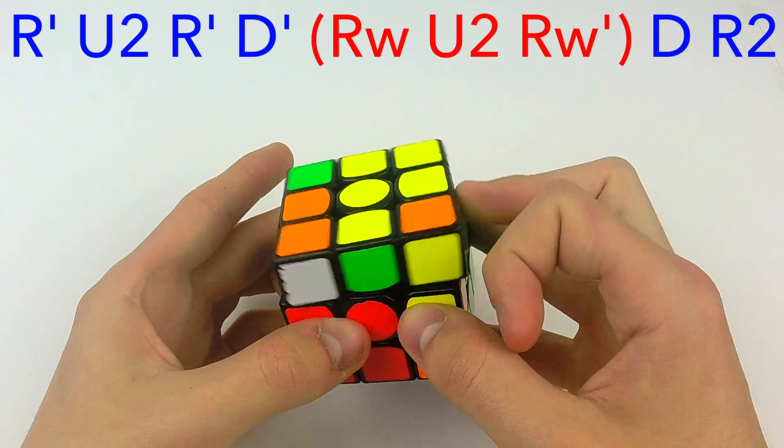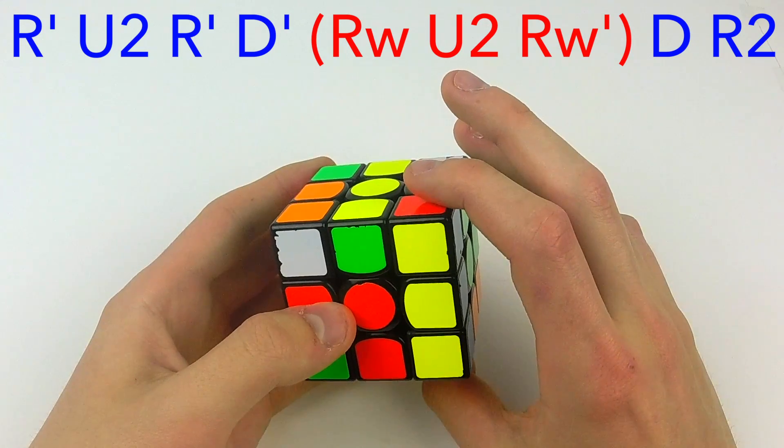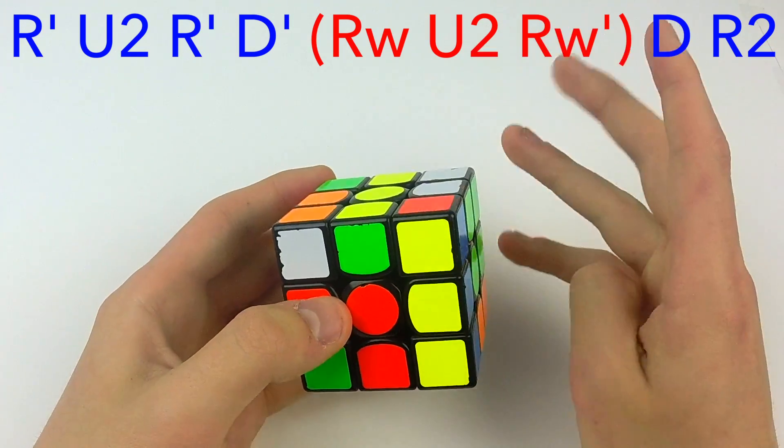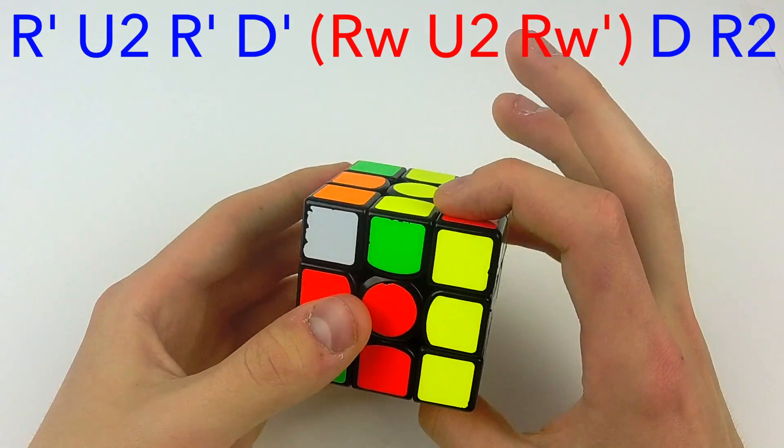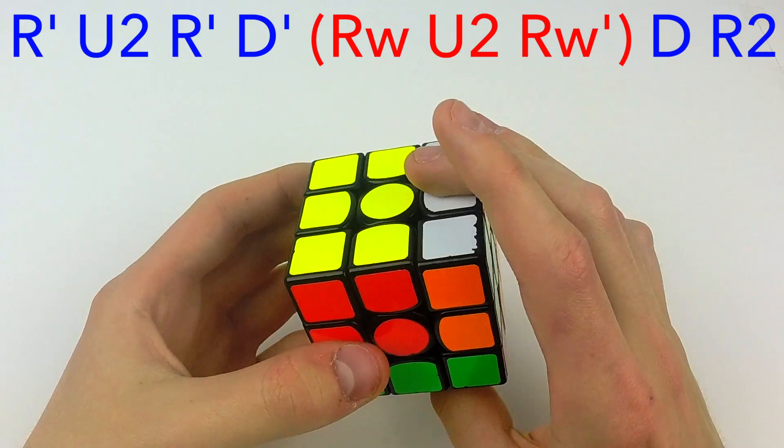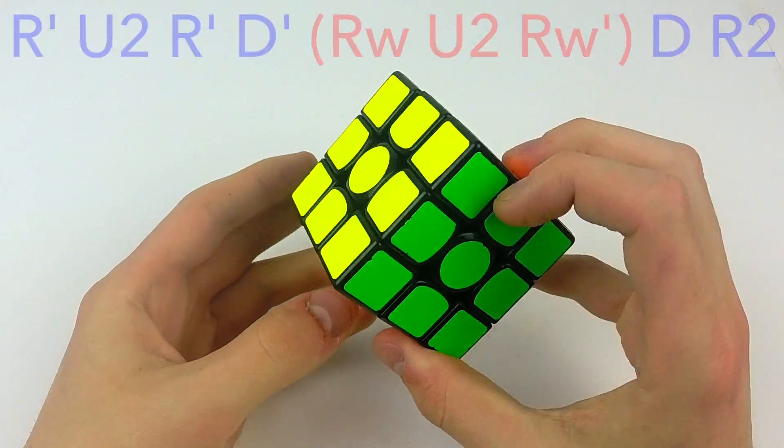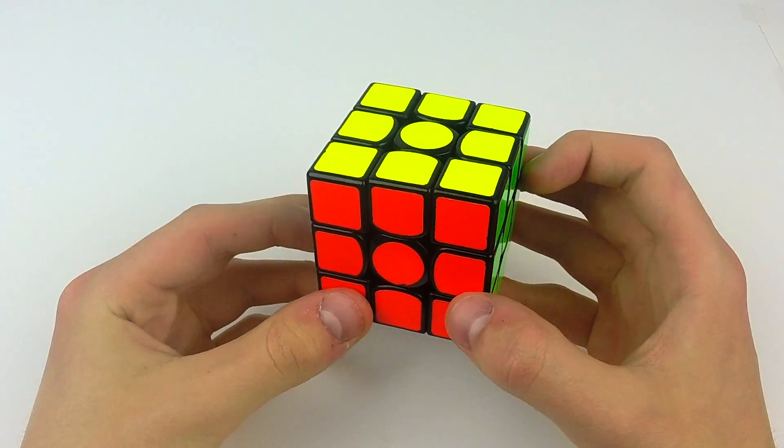R' U2 R' D' So far it's just like normal. But instead of doing the regular R U2 R' here do Y R U2 Y R' and then just finish off like normal D R2 and then you will skip PLL in that case as well.